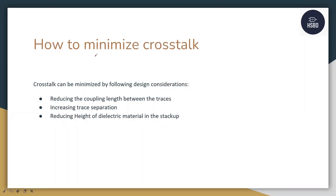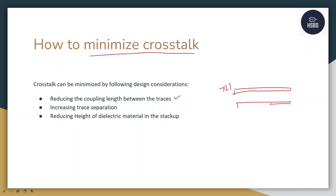Let us discuss the ways to minimize crosstalk. First is reducing the coupling length. There is transmission line TL1 and TL2 — how far these lines are coupled plays a major role. If you reduce the coupling length, the crosstalk will go down. By reducing the coupling length and by increasing the trace separation, you can reduce the crosstalk.